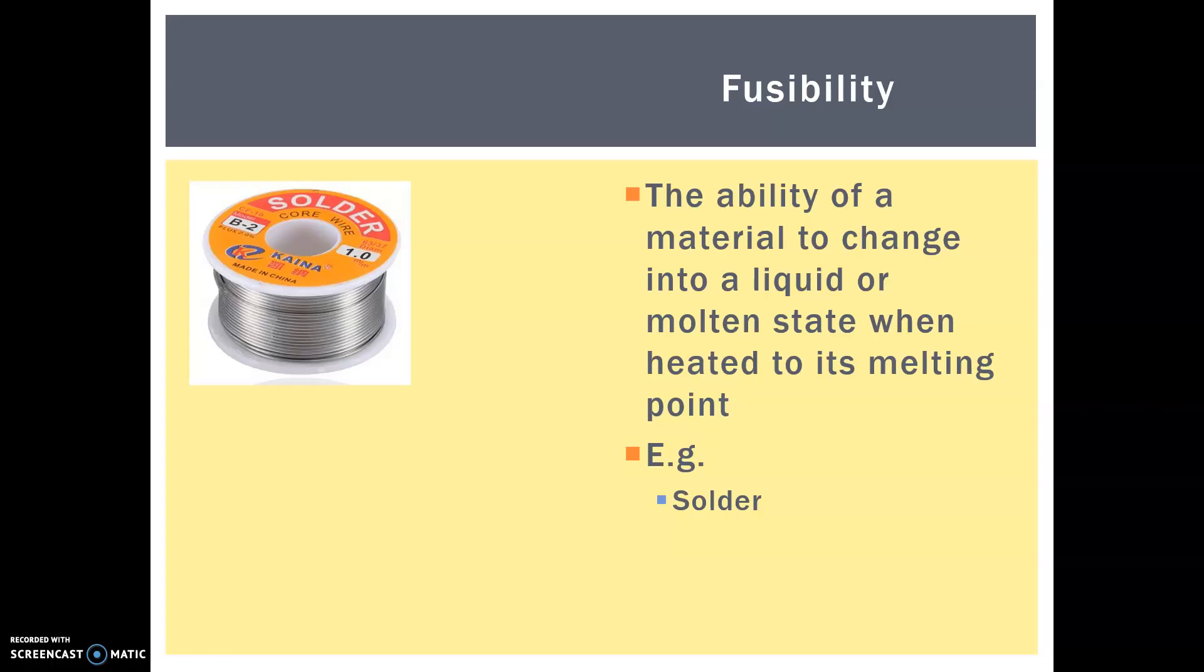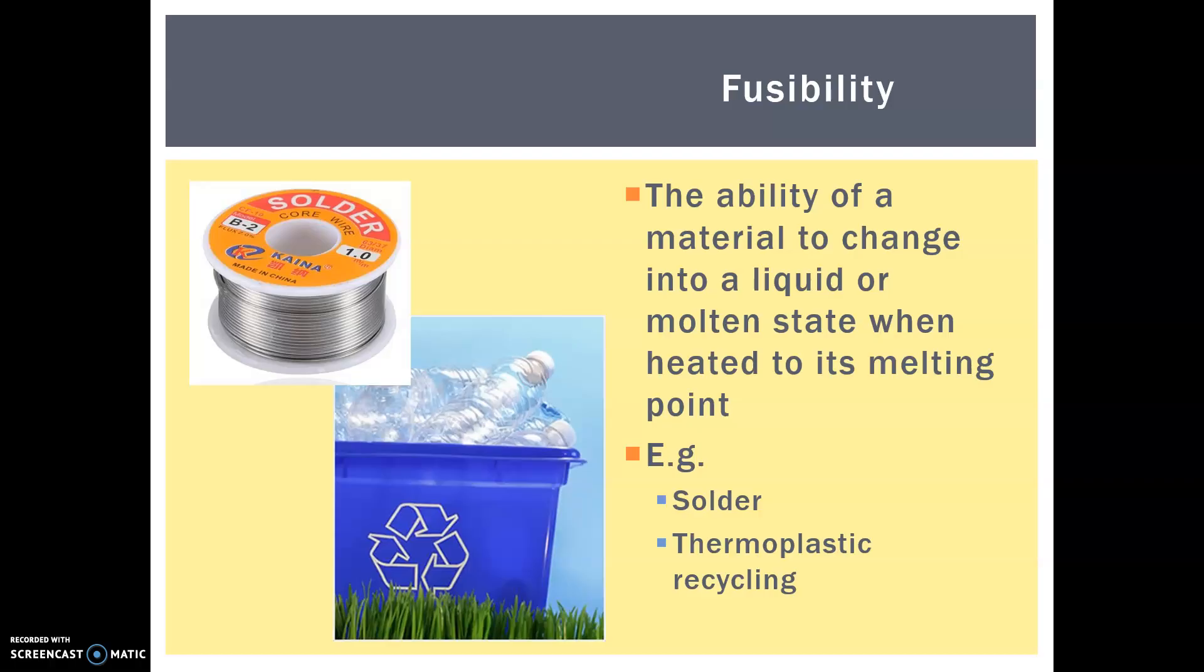So for instance, here we have solder, which has a very low melting point. So it's very fusible, it can go into its liquid state very quickly. And thermoplastic recycling, this is really useful because you have to be able to chip the different parts of the plastic and in order to then give it a big surface area so that you can then heat it to its melting point before it's then blow molded to make a new product.